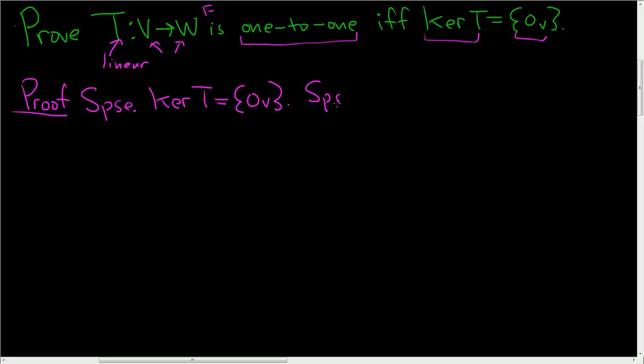So suppose, I'll just write suppose, that T of X is equal to T of Y for some arbitrary X, Y in V. Now we need to show that X is equal to Y. So we can subtract T of Y from both sides. So we end up with T of X minus T of Y equal to the zero vector in W.